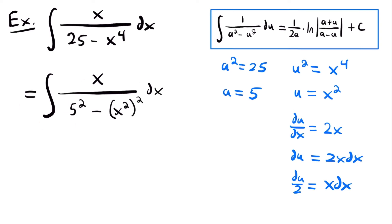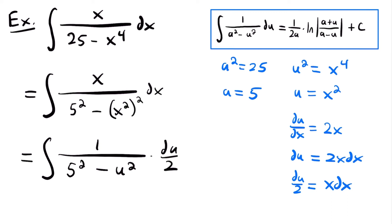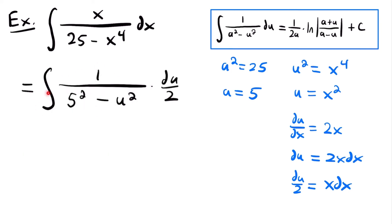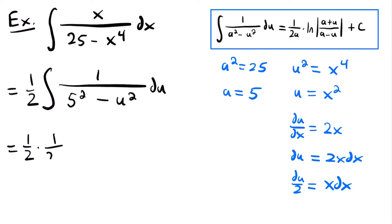And so now we can rewrite this integral in terms of u, and so we'll have that it is equal to the integral of 1 divided by 5 squared minus u squared, times du divided by 2. We replaced x squared with u because that's what we set it equal to, and we replaced x dx with du divided by 2 because that's what we found that was equal to. So now if we clean up our work here, we can rewrite this integral by pulling this one half out to the front of the integral. And so now we can solve this integral using this integration rule because the functions match up. So we'll have one half times 1 divided by 2 times a — so 1 divided by 2 times 5, since a equals 5 — times the natural log of the absolute value of (a plus u), so 5 plus u, divided by (a minus u), so 5 minus u, and then we will add c.